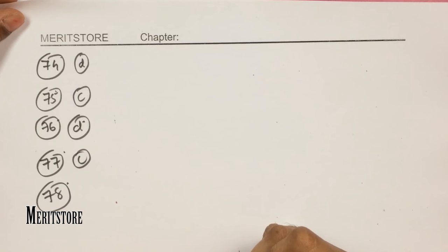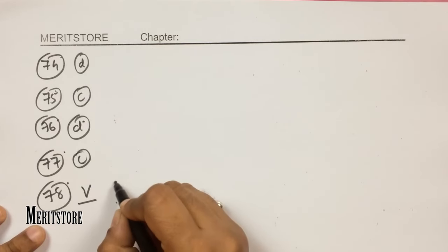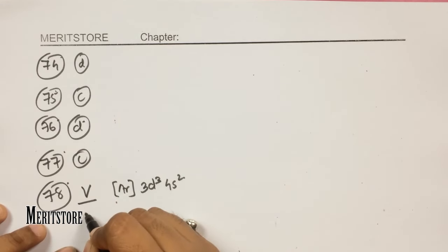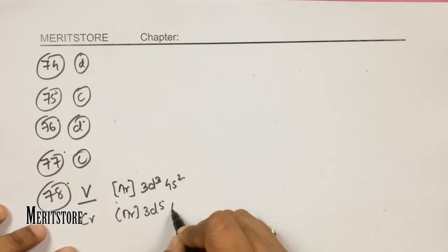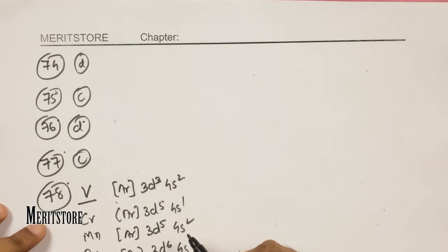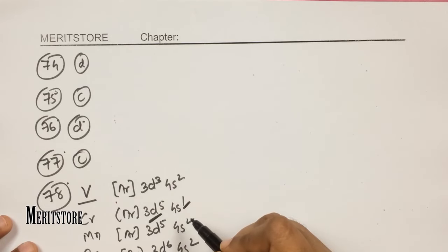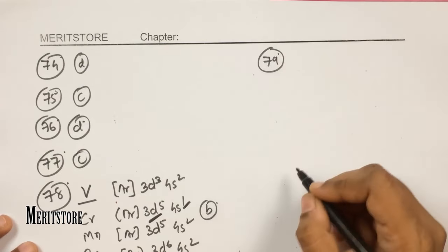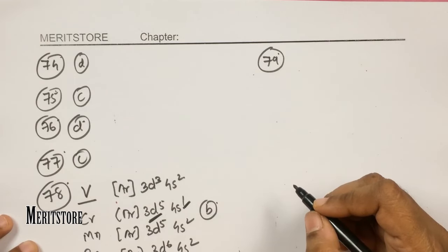Question number 78: which element has the highest second ionization energy among vanadium (Z=23), chromium (Z=24), manganese (Z=25), and iron (Z=26)? Chromium's configuration is [Ar] 3d⁵ 4s¹. After losing one electron from 4s, it attains a half-filled d orbital (3d⁵), which is highly stable. Therefore it is very difficult to remove the second electron, giving chromium the highest second ionization energy. Hence option B.